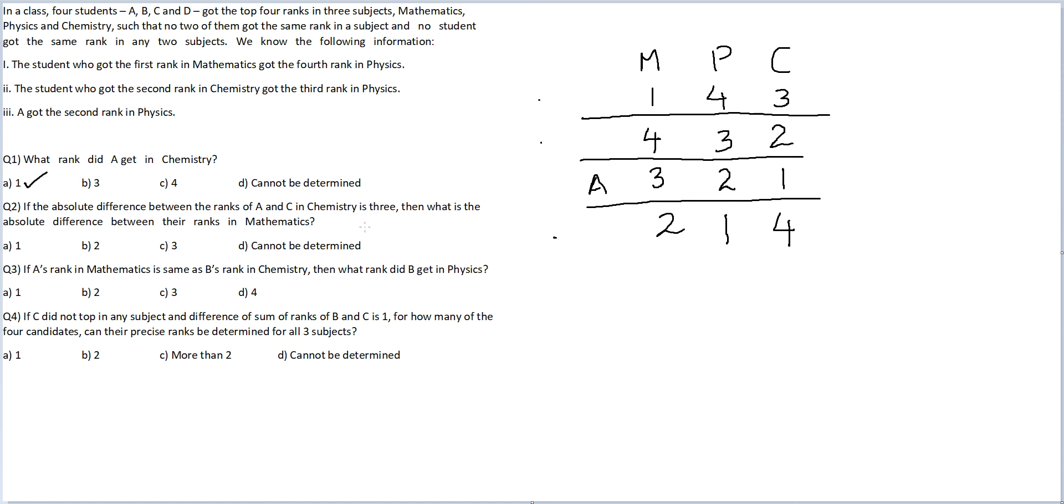If the absolute difference between the ranks of A and C in Chemistry is three. A and C in Chemistry. A has one. So C would have to be here. So we are looking at a case where C is here. Then what is the absolute difference between the ranks in Mathematics? In Mathematics, A has three. C has two. So the absolute difference between the ranks is one. Therefore, again, option A, one.